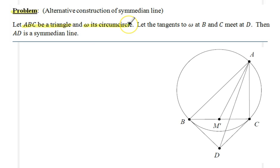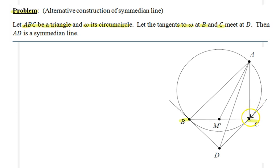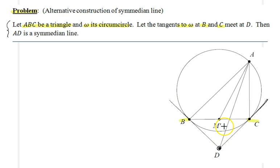Here is the alternative construction, stated as a problem. Given triangle ABC and its circumcircle omega, the tangents to omega at points B and C — where BD is a tangent at B and DC is a tangent at C — meet at a point D. The claim is that line AD is in fact the symmedian line associated with vertex A.